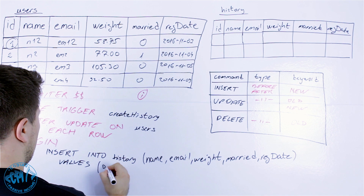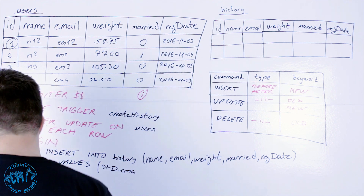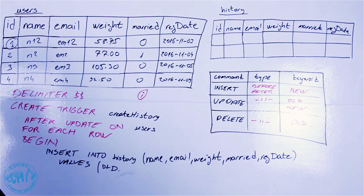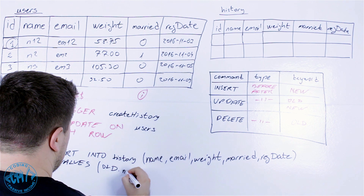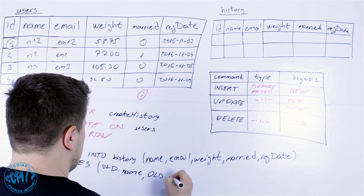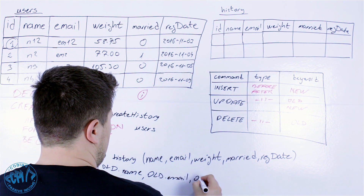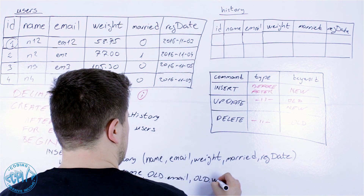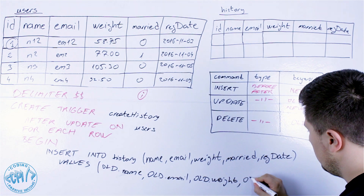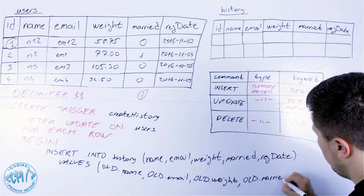For the values, since we are using the update command, we use the 'old' keyword to capture the data that existed before the change. So we write: old.name, old.email, old.weight.